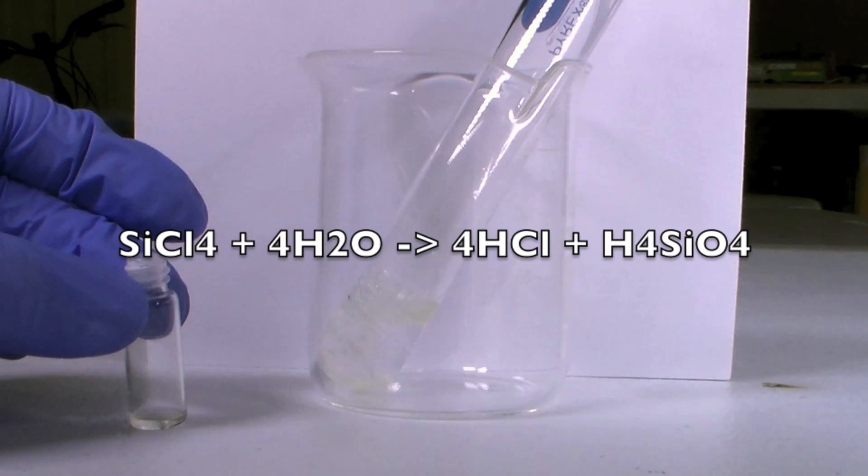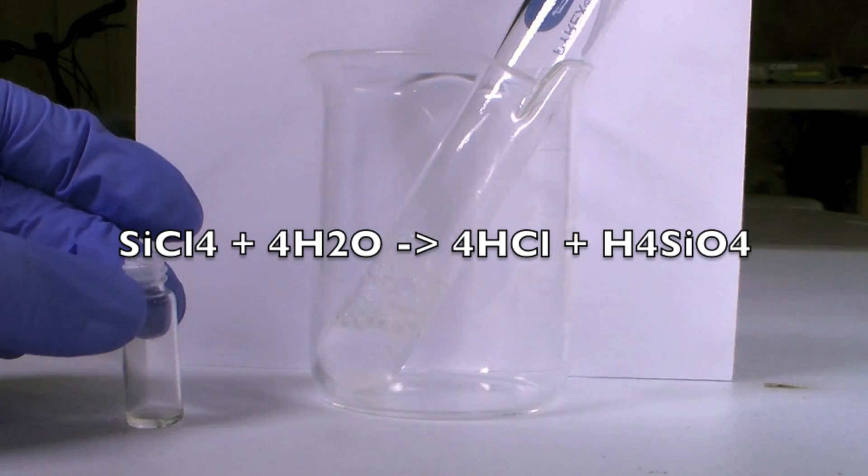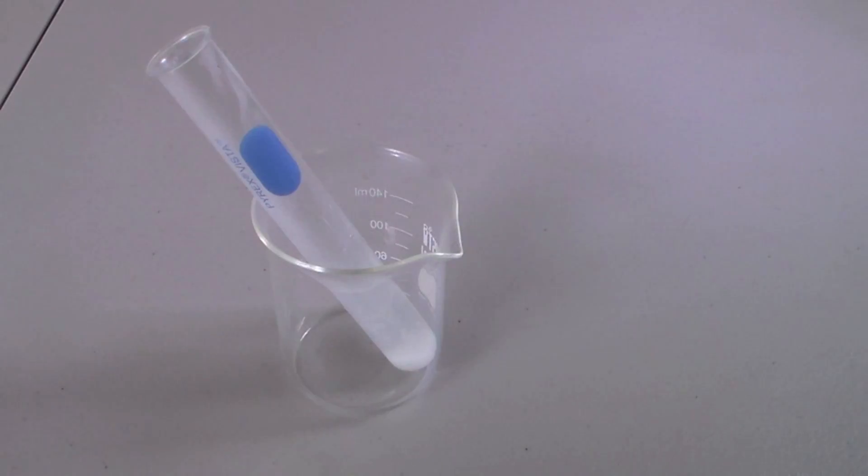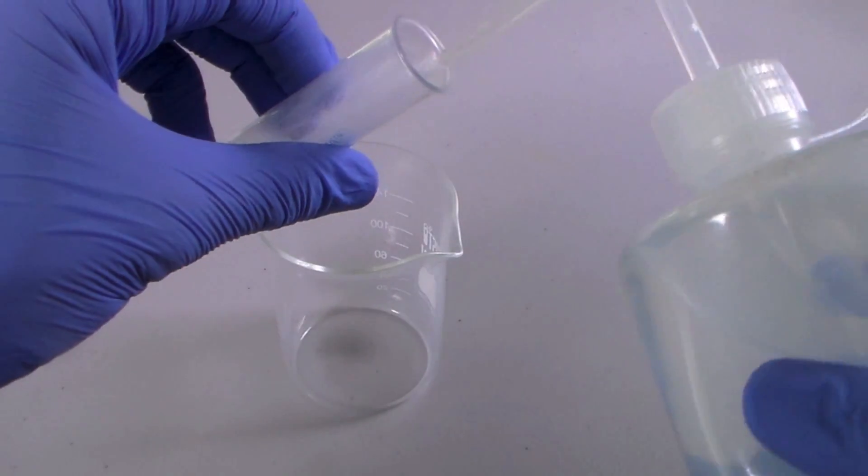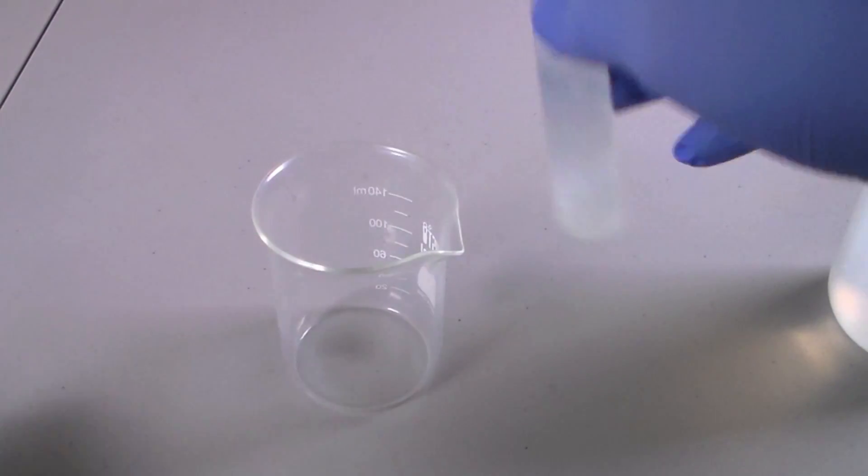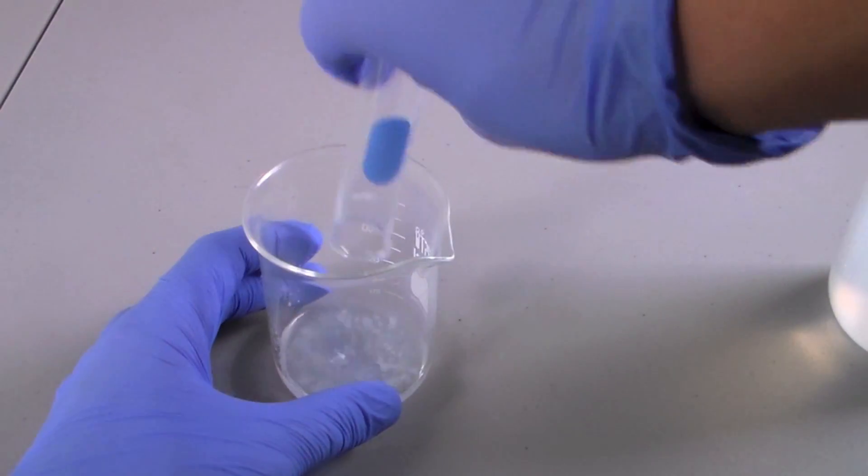The products of this reaction are hydrochloric acid and silicic acid. The silicic acid is the white solid left in the test tube. This can be heated to convert it into silicon dioxide or sand.